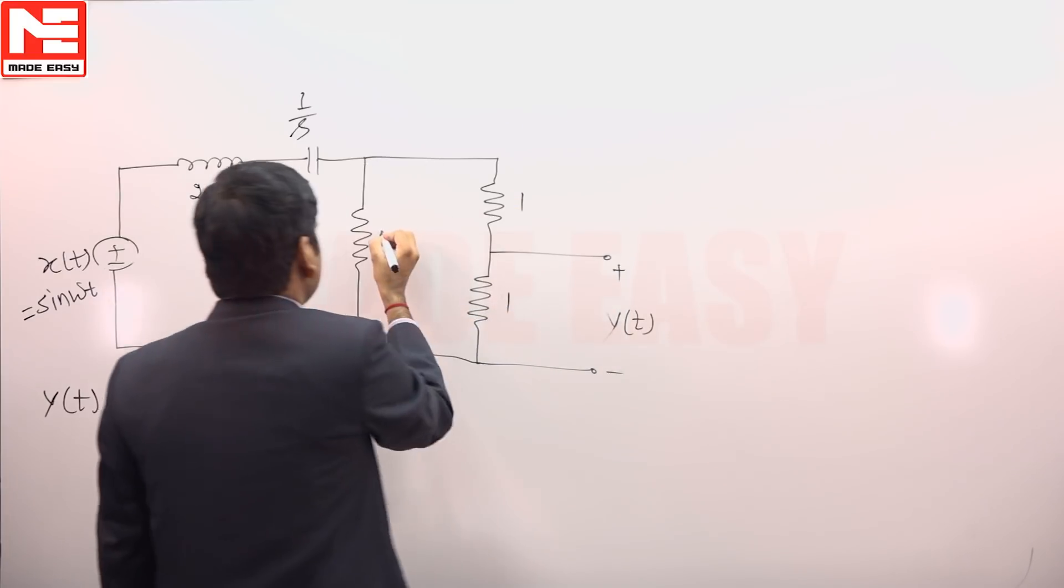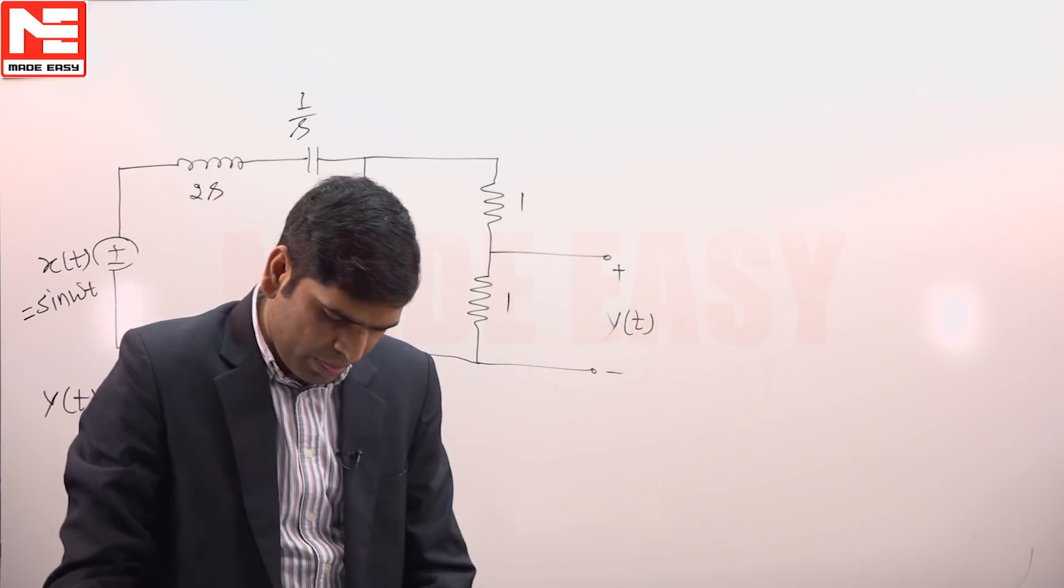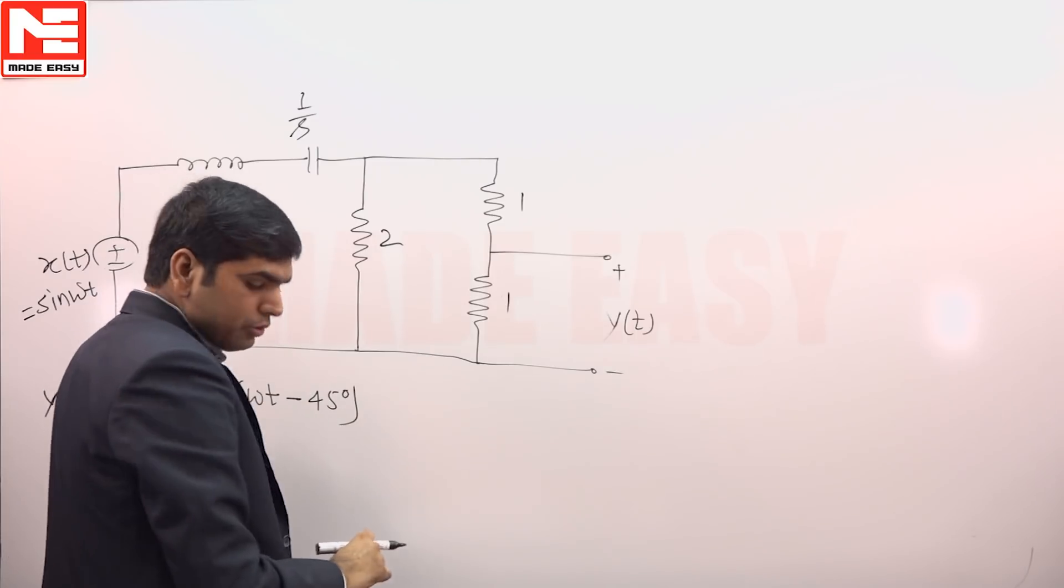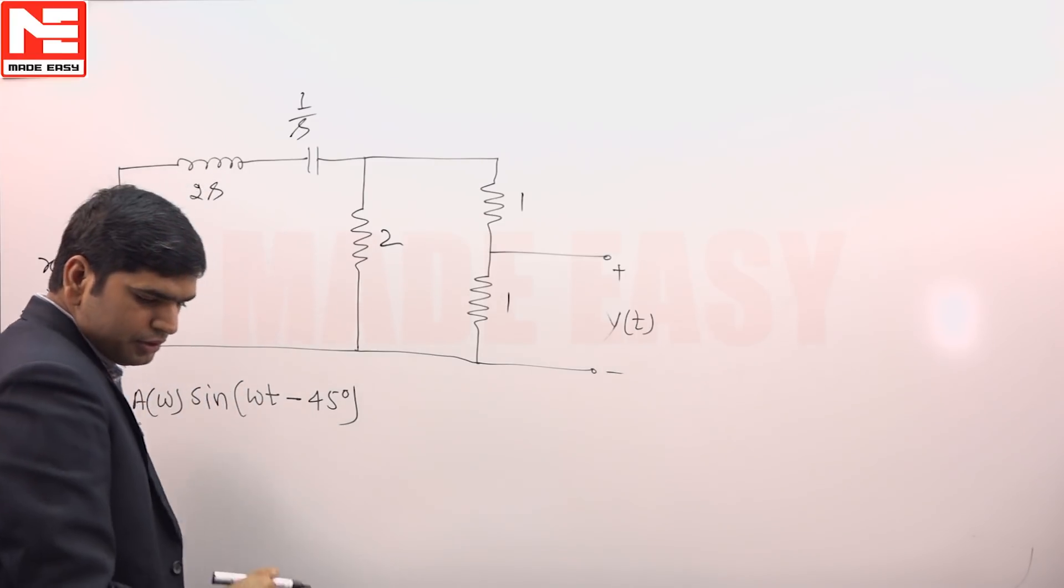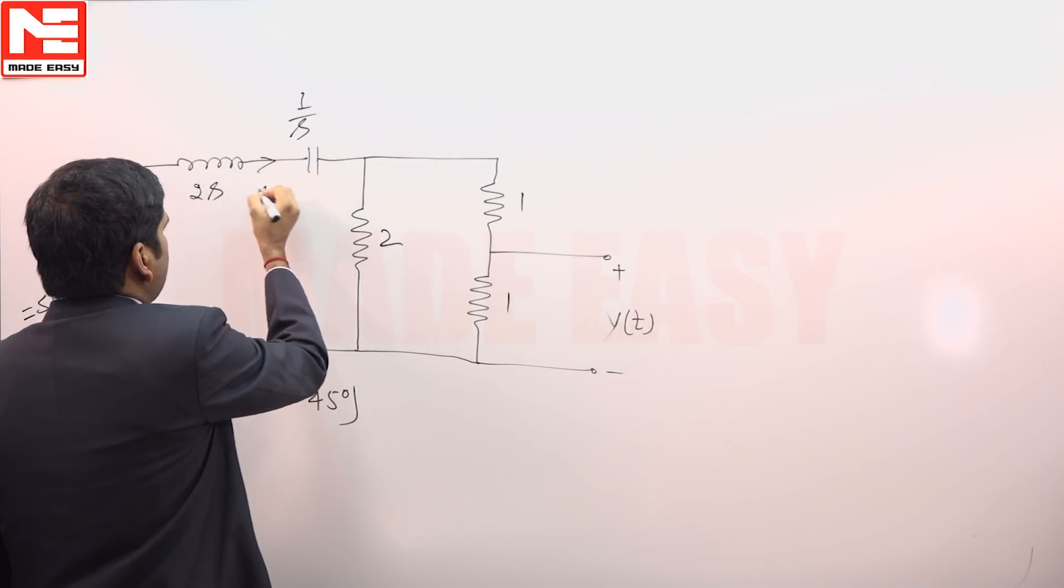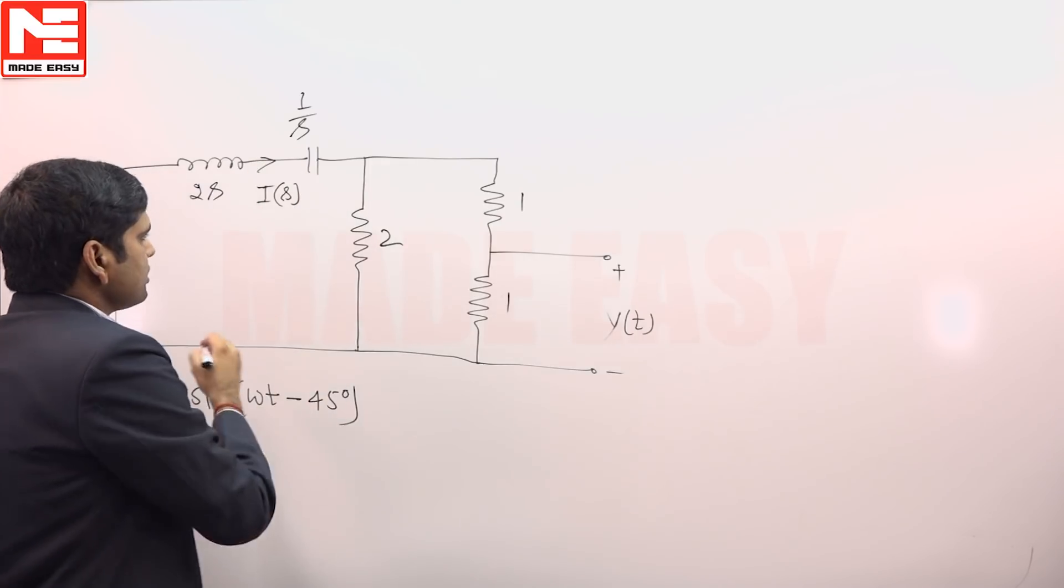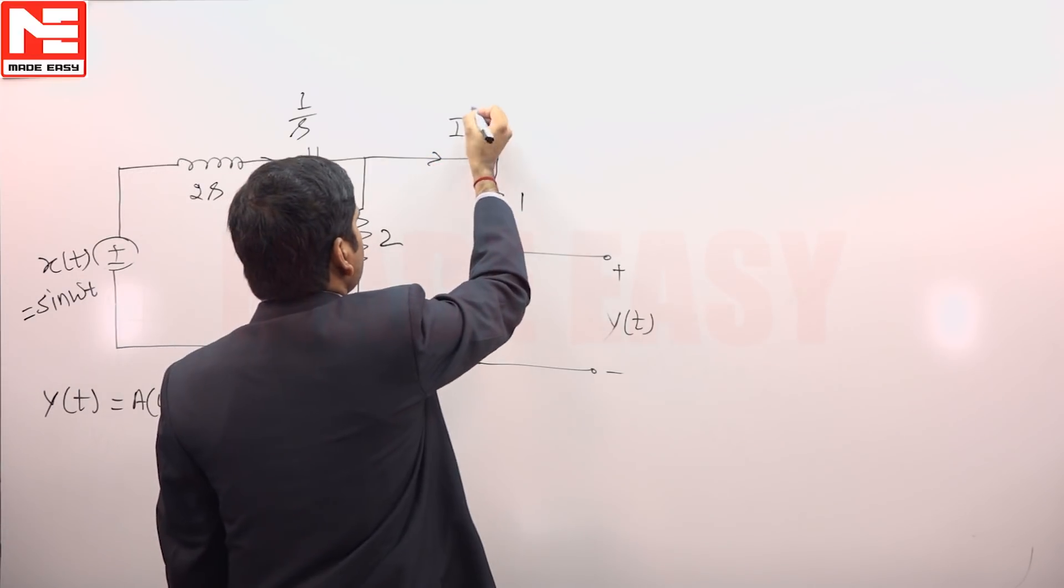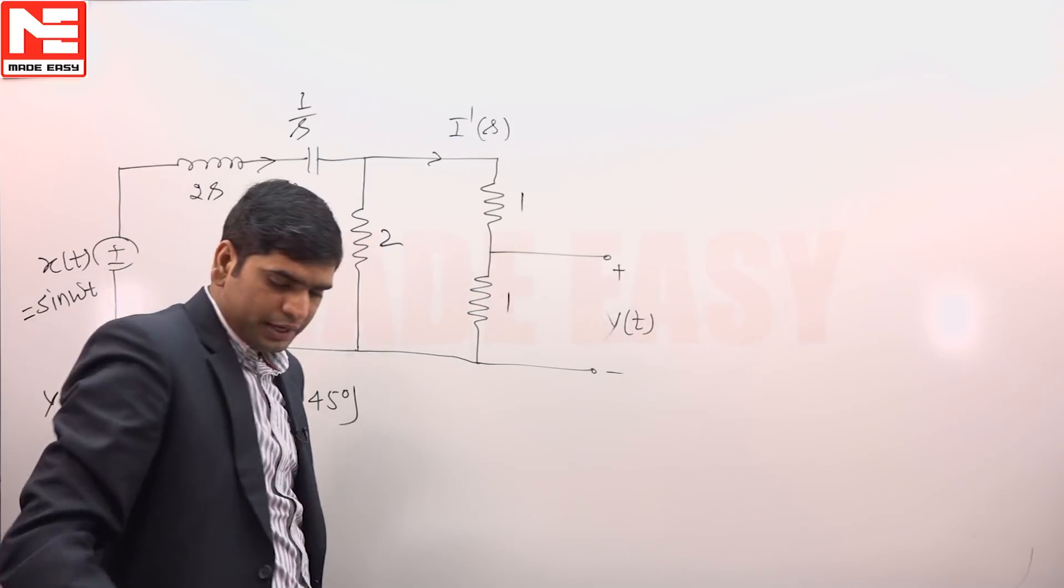These are 1, 1 and 2, same. Now, if we want to calculate the current, this current i(s) is flowing across this branch and suppose the current flowing this is i'(s).